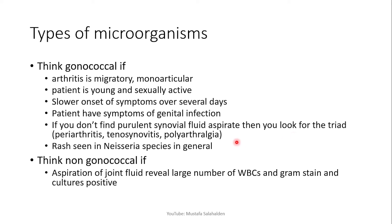There may also be a rash, which is seen with Neisseria species in general. Think non-gonococcal septic arthritis if aspiration of joint fluid reveals a large number of white blood cells with positive gram stain and cultures. The septic fluid is always purulent if the cause is non-gonococcal.